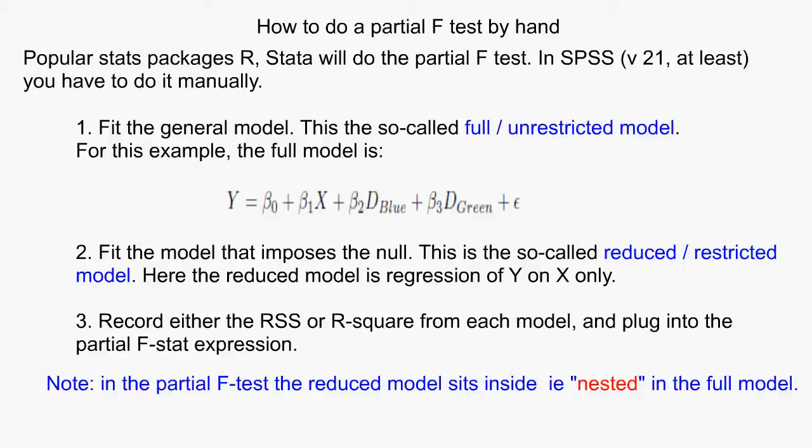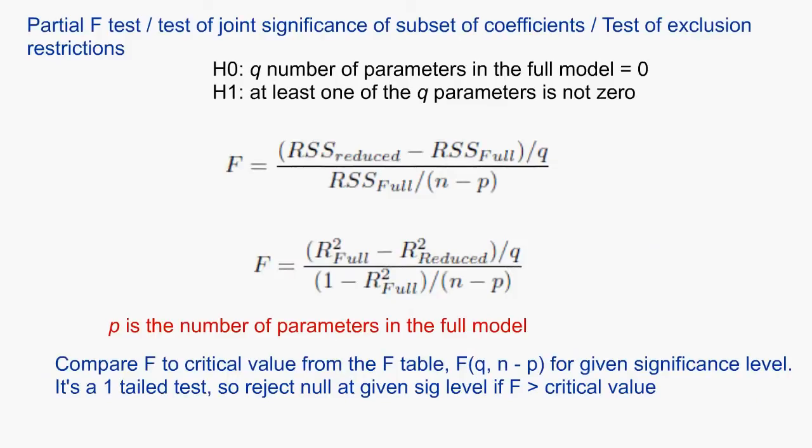The test statistic may be expressed in terms of residual sum of squares (RSS) or in terms of R-squared from the two models. In either case, the key part of the test is the numerator that computes the difference in fit. Suppose the null hypothesis is true that the coefficients are zero. Then the RSS and R-squared in both models will be similar, so the difference in RSS and R-squared will be close to zero, and so the F-stat will be close to zero. A test statistic value far from zero points to rejecting the null.